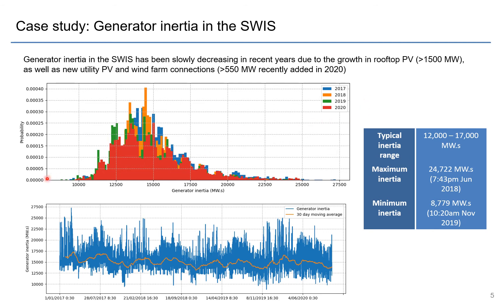We tracked large synchronous generator inertia in the SWIS, and it's been slowly trending downwards in recent years — primarily due to growth in rooftop PV as well as new utility-scale PV and wind farms. The histograms from different years show inertia usually in the range of 12,000 to 17,000 megawatt seconds. The blue curve from 2017 is shifted to the right, meaning we had more inertia then. As the years passed — 2018, 2019, 2020 — there's a slight shift to the left, toward lower inertia, with the lows getting lower and the highs less high. We've reached minimum inertias of around 8.8 gigawatt seconds.